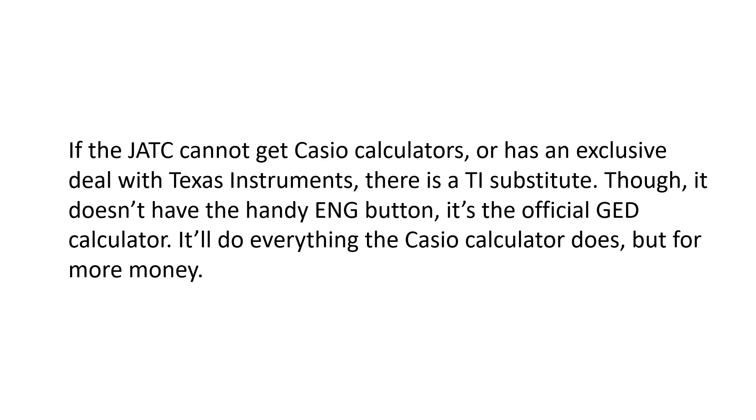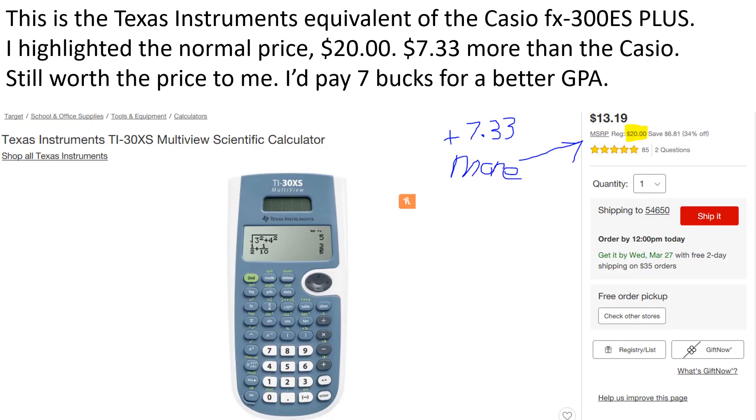If the JATC cannot get Casio calculators or has an exclusive deal with Texas Instruments, there is a Texas Instruments substitute. Though it doesn't have the handy ENG button, it's the official GED calculator. It'll do everything the Casio calculator does, but for more money. This is the Texas Instruments equivalent of the Casio FX300ES Plus. I highlighted the normal price, $20. $7.33 more than the Casio. Still worth the price to me. I'd pay $7 for a better GPA.